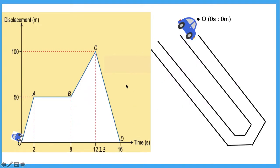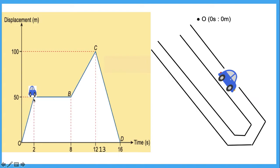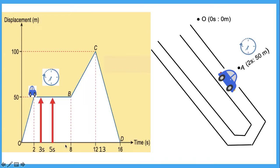This is to show you the movement of a car based on this graph. When the car is at the starting point, the displacement is 0 meters and the time is 0 seconds. When this car starts to move, its displacement changes and increases. When it reaches a displacement of 50 meters in 2 seconds at position A, this car stops moving and rests. The time increases, but the displacement remains unchanged, meaning the car is at rest for 6 seconds.